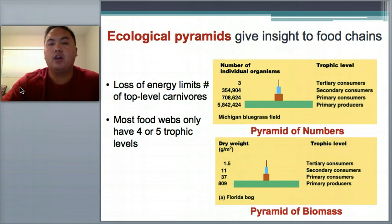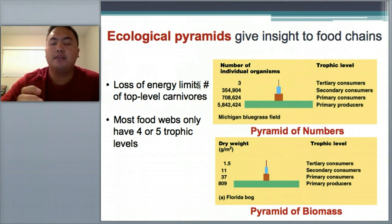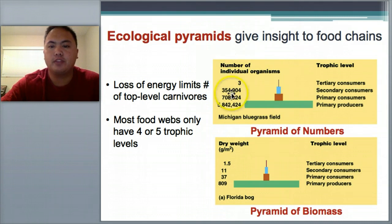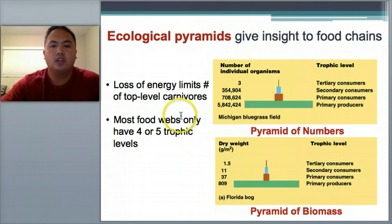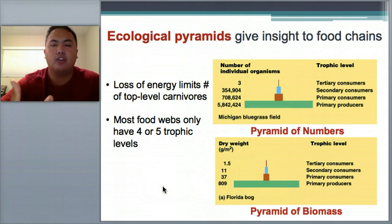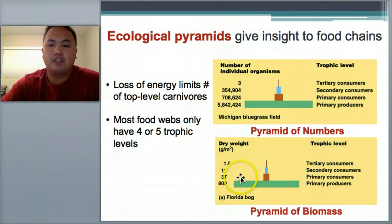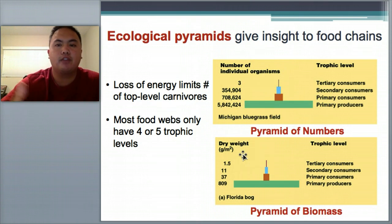This can be illustrated using ecological pyramids, which give insight into food chains. The loss of energy limits the number of top-level carnivores. In a Michigan bluegrass field measured by number of individuals: 6 million producers support about 700,000 primary consumers, 354,000 secondary consumers, but only 3 tertiary consumers. Since only 10% transfers each level, there's a limit to how many organisms an ecosystem can support, which is why food webs only have 4 or 5 trophic levels. A biomass pyramid works similarly — 800 grams of producers supports 37 grams for consumers, 11 for secondary, and 1.5 for tertiary.